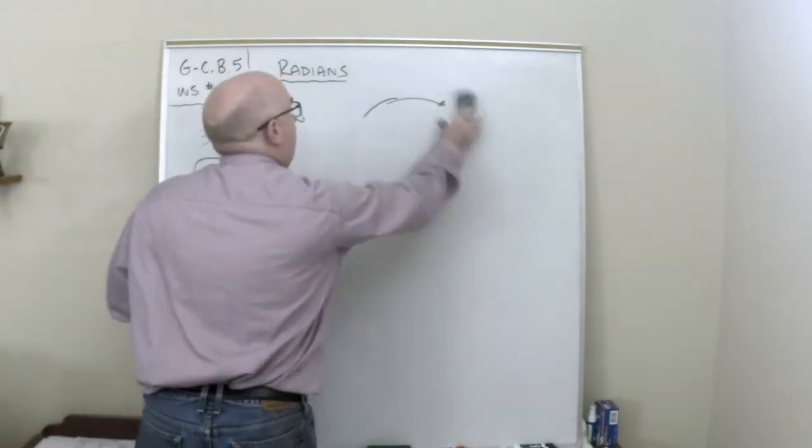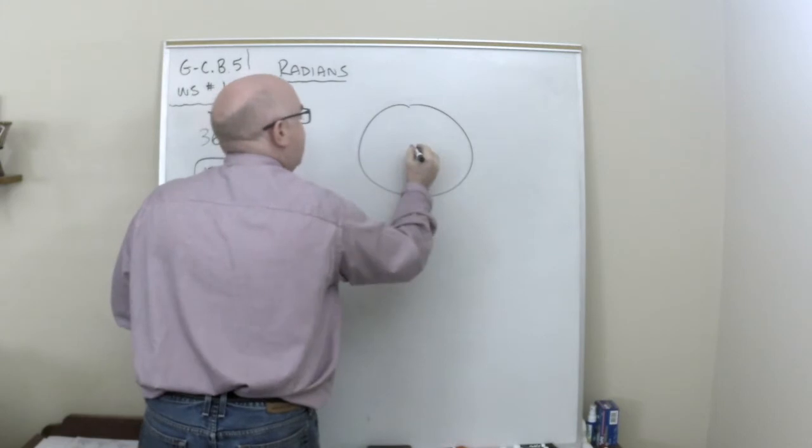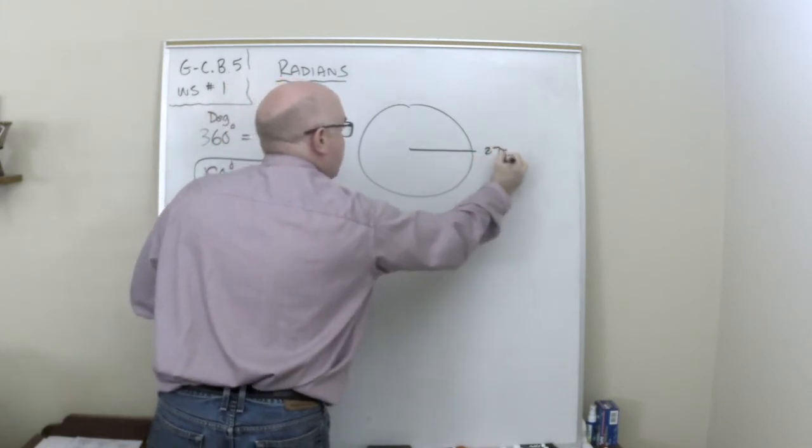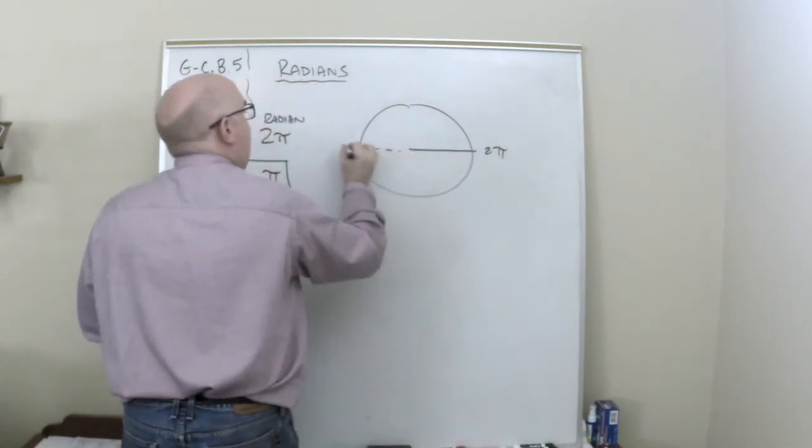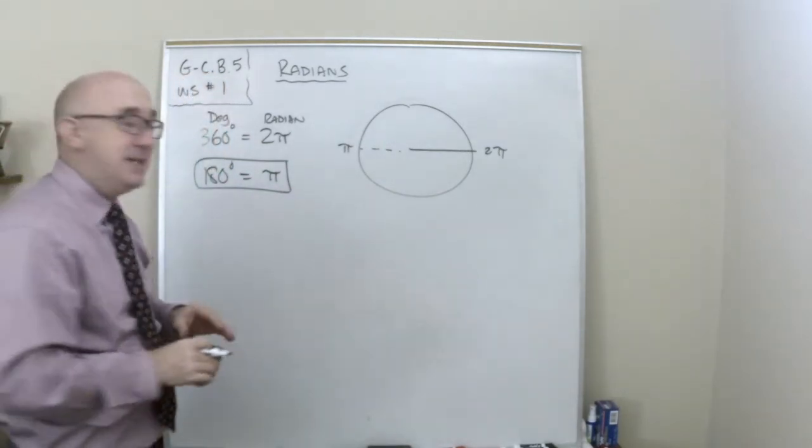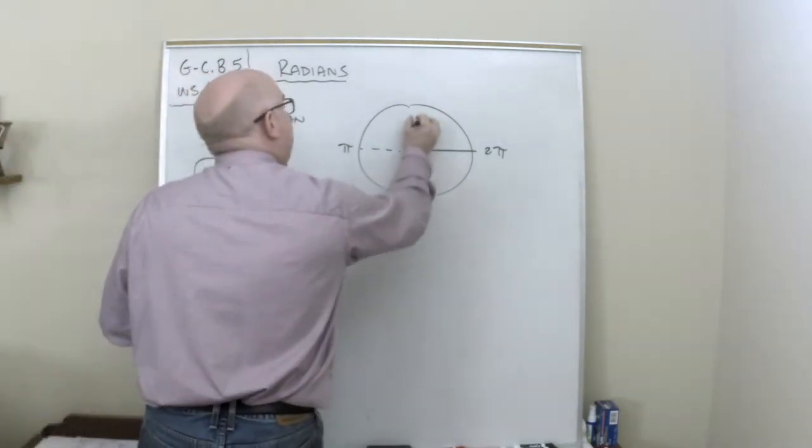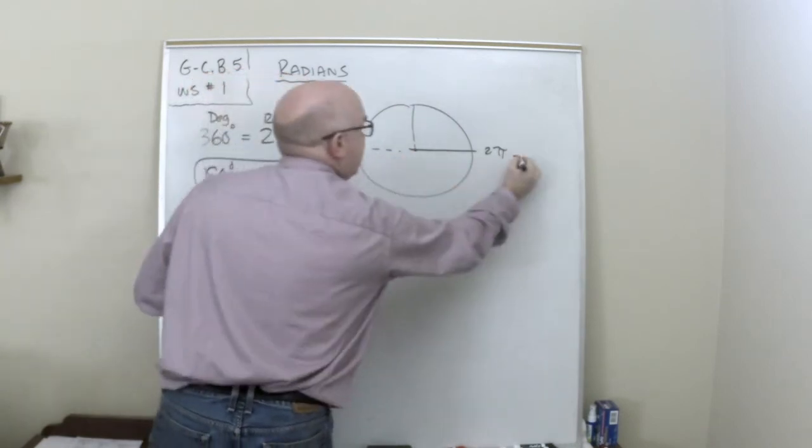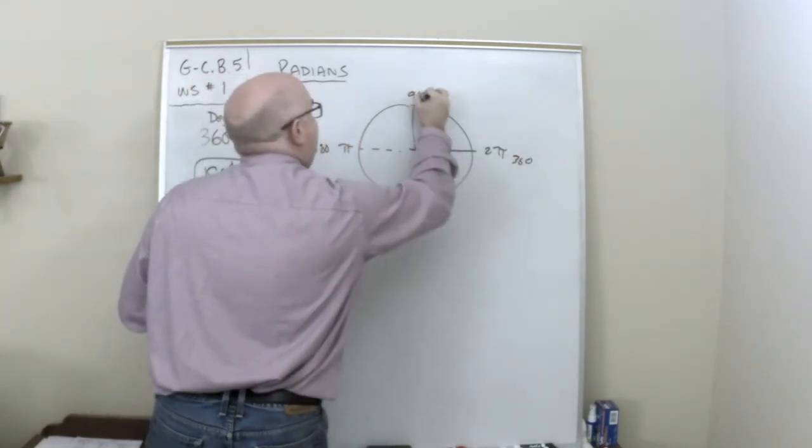Because if you say to me that two pi is here, then at the halfway, it's pi over here. Radians. Now what would be 90 degrees? So this is 180. This is 360. What's the 90?